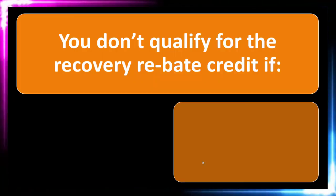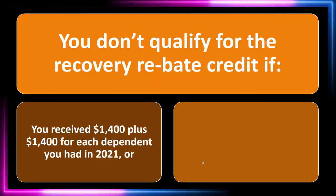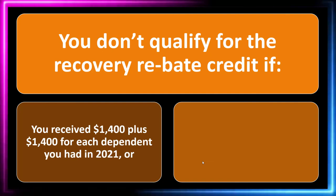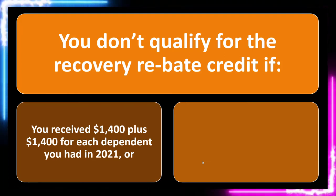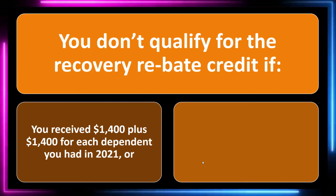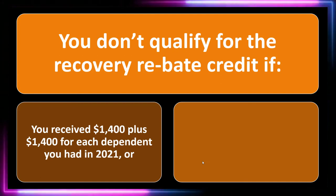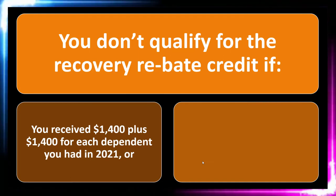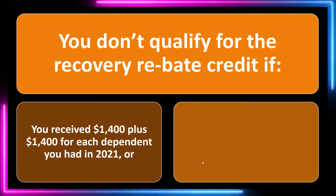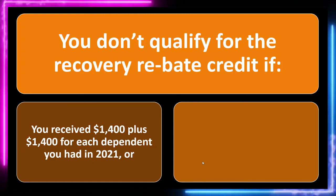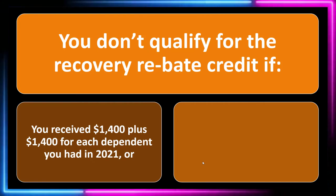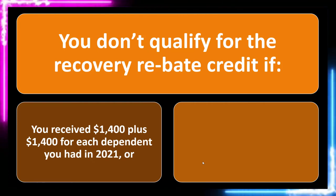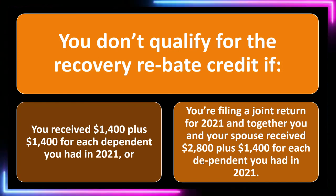You don't qualify for the recovery rebate credit if you received $1,400 plus $1,400 for each dependent you had in 2021. If they got it right and you received $1,400 for yourself and each dependent, you already got the credit. It's not like the advanced child tax credit where they only give you half up front — here they're trying to give you the whole amount up front. The recovery rebate credit is really just a fixing tool to correct any problems with the prepayment.